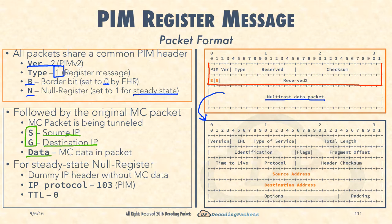If the RP has any actual receivers on its RPT or the star comma G tree, it can simply take the data out of the registration packet and multicast it down the star comma G tree. Hold on to that thought — we'll discuss it in a lot more detail.